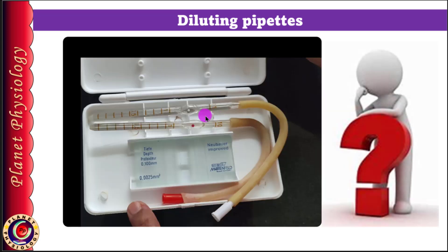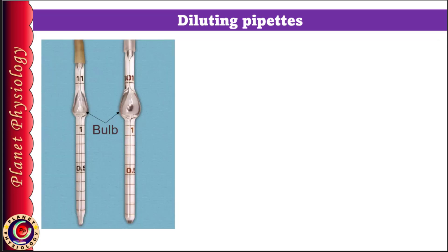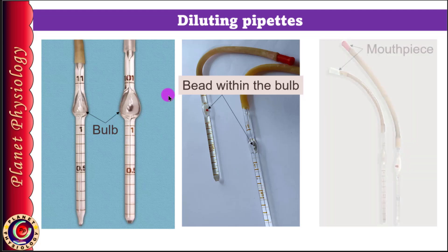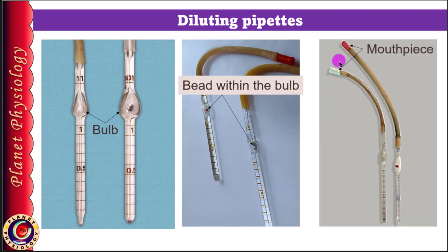At this moment, take a pause and observe both these pipettes. Do you find any similarities and differences among them? Note your findings and then resume. You must have noted that both pipettes look similar, but one has a bigger dilatation called the bulb. Some of you might have noted there is a small bead within the bulb which differs in color. Some might have noted differences in the numbers mentioned on the pipettes, and another quick observation could be the color difference in the last part of the pipette. If you noted all these four points, you are a keen observer.